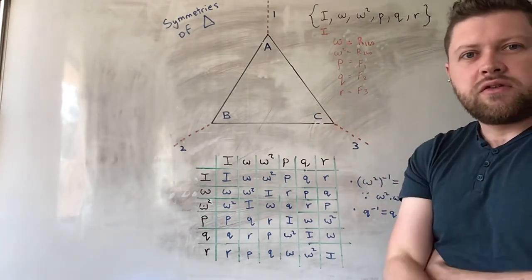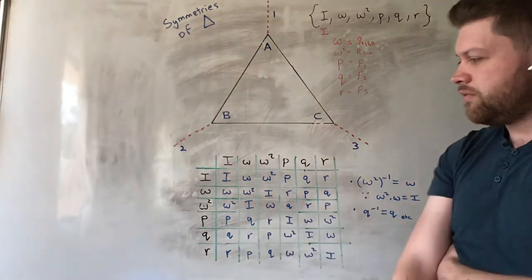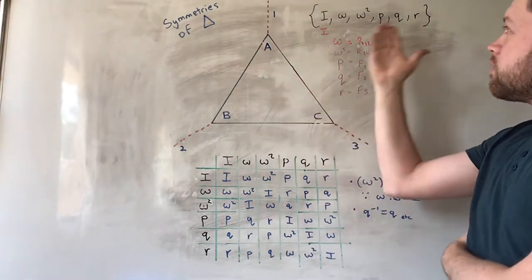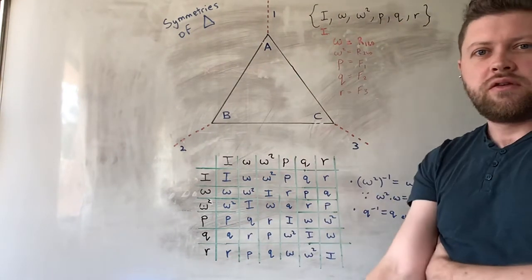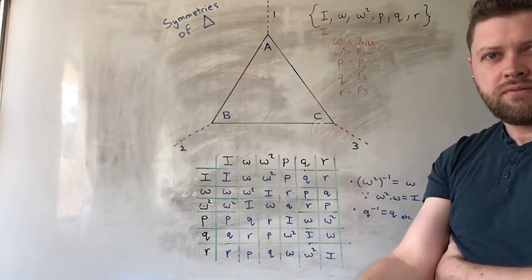I'll just tell you now that associativity also applies in this instance. So, this is a group. This is definitely a group. This is the group of symmetries of the equilateral triangle in two dimensions, obviously.